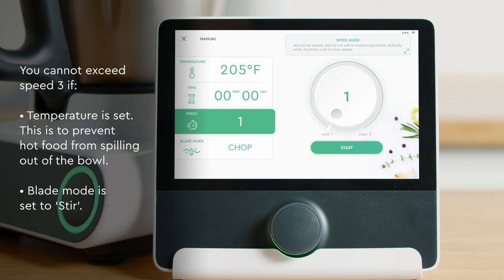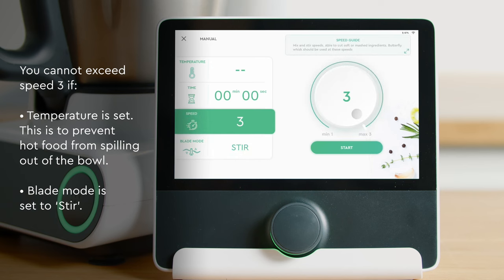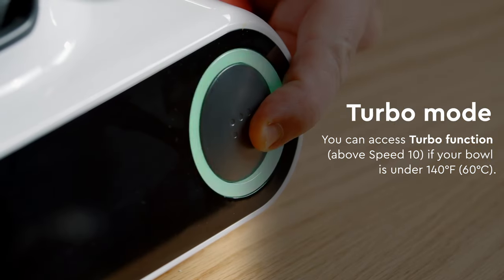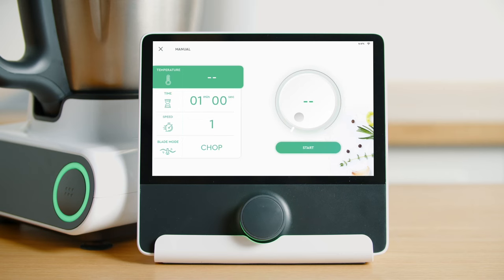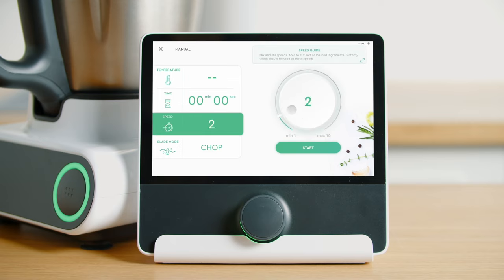Some safety points to note is that if you have any temperature attached the maximum speed you can go if stirring or chopping is speed three. If you are in stirring mode the maximum speed that you can have is only speed three. We also have turbo mode that is activated from your hub and controlled on the main unit. Turbo mode is where foods are processed at an extremely high speed very quickly. Some other things to note that the temperature on Molto can go between zero and 265 Fahrenheit. The time limit in manual mode is up to 100 minutes and the speed of the blade can go from speed one to speed 10 during chopping.